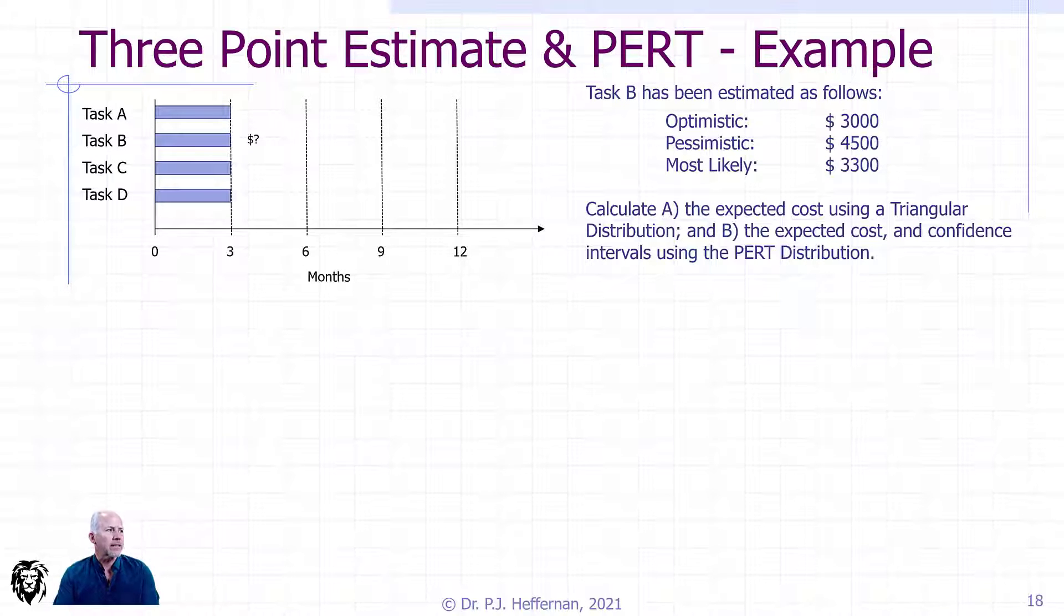Let's look at an example using three-point estimation and PERT. We're going to be looking at task B. We looked at task B earlier in the budgeting video. When we estimate it, we see optimistically $3,000, pessimistically $4,500. But our most likely estimate, we say, is $3,300.